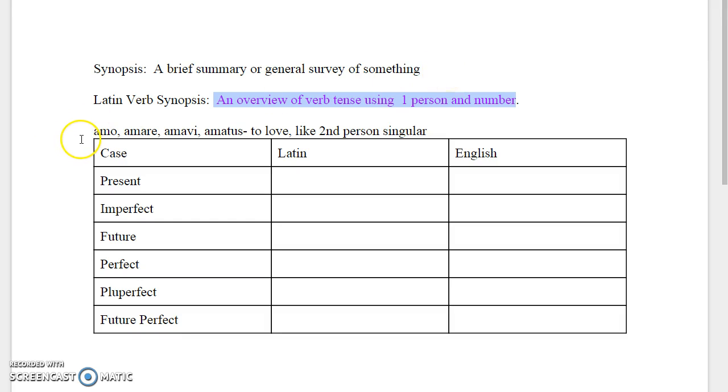So let's take a look first at the principal parts of the verb. Here we have amo, amare, amavi, amatus, to love. And I want you to look for it in the second person singular form of that. So I want you to create the second person singular.